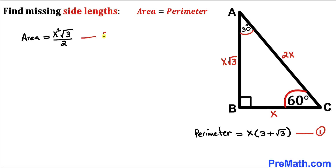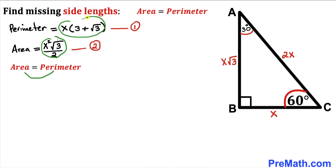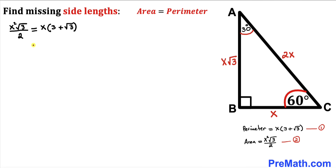Equation 1 represents the perimeter and equation 2 represents the area of this triangle. Since area equals perimeter, we equate them: x squared times square root of 3 divided by 2 equals x times (3 plus square root of 3). Here's our next step.